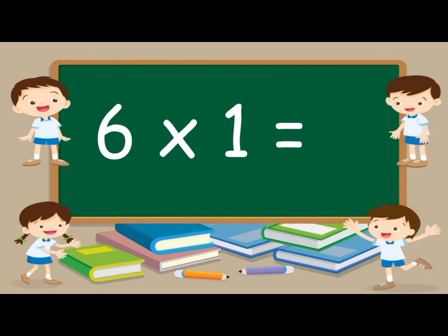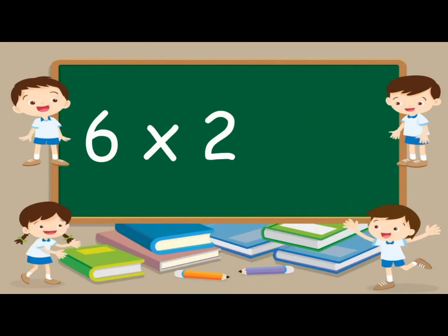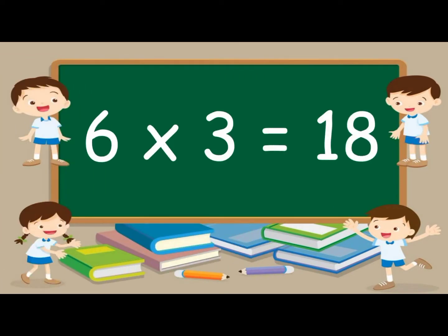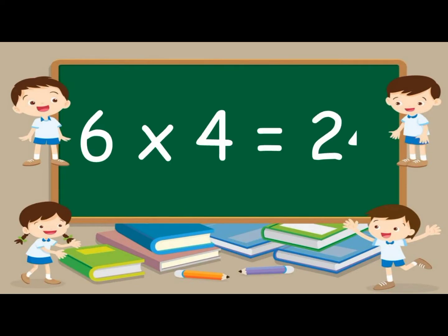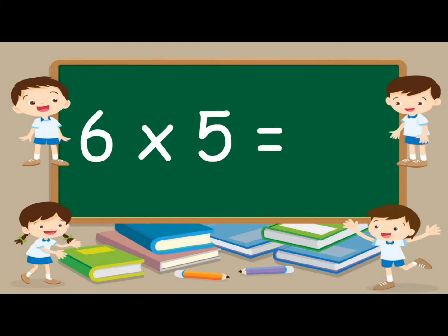Six ones are six. Six twos are twelve. Six threes are eighteen. Six fours are twenty-four. Six fives are thirty.